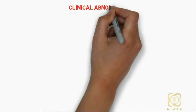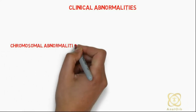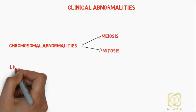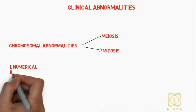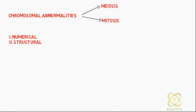Most clinical abnormalities associated with gametogenesis are usually chromosomal abnormalities occurring either during mitosis or meiosis. These can be divided into numerical abnormalities and structural abnormalities.